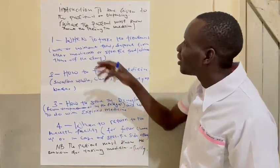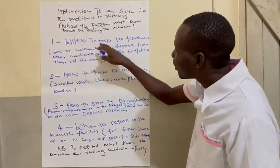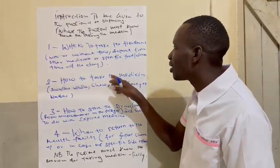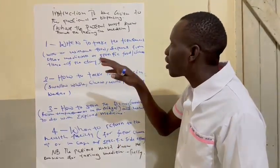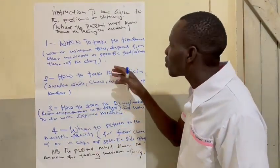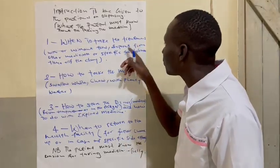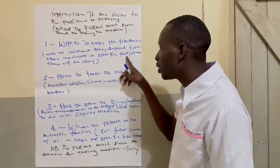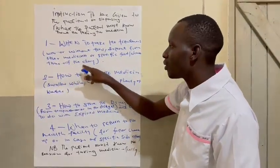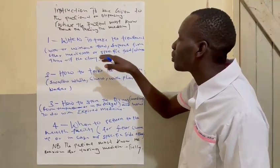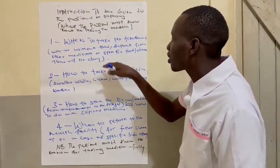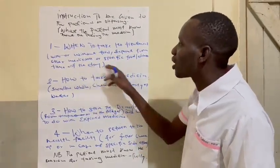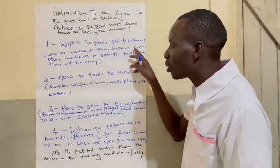Information number one: you have to tell the patient when to take the treatment. For example, you take it without food. And if drugs like Doxycycline and Ciprofloxacin have been prescribed, you may tell them to separate from other medications or specific food, drink, and time of day. If someone is prescribed Doxy and PCM — PCM three times a day and Doxy two times a day — that is the information they must go with.